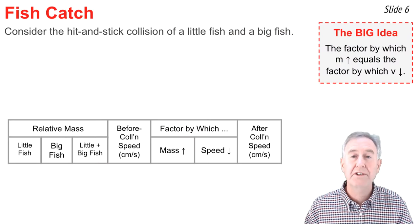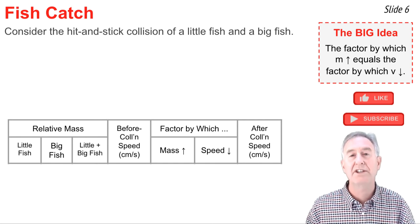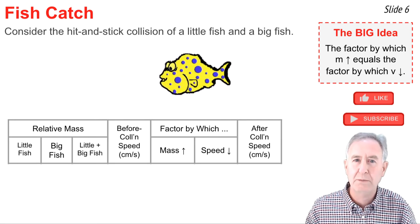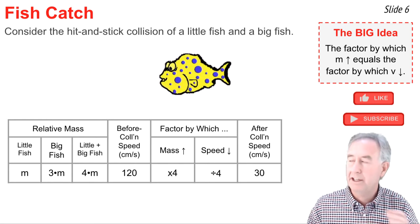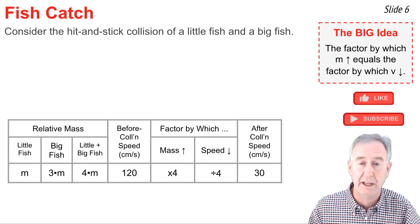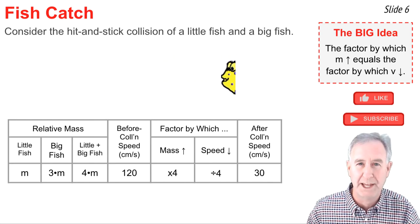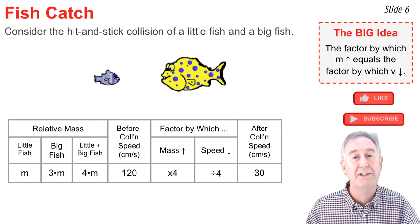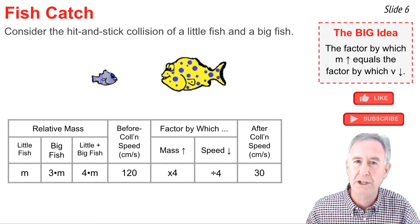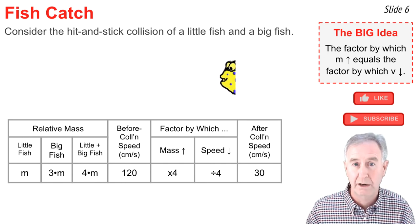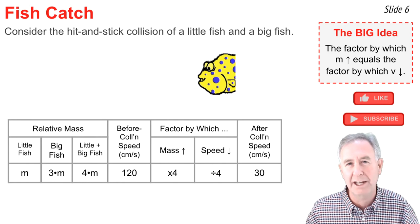The trick can be summarized like this: in a hit-and-stick collision, the factor by which the mass increases is equal to the factor by which the speed decreases. In our first fish example, a fish of mass m is caught by a big fish of mass 3m. The mass increases by a factor of 4 — from m to 4m — so the speed decreases by a factor of 4. We take 120 cm/s and divide by 4 to get 30 cm/s.